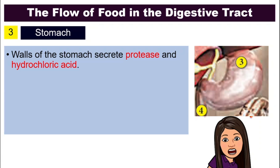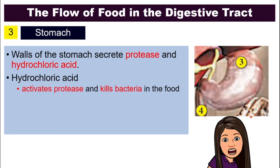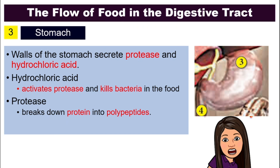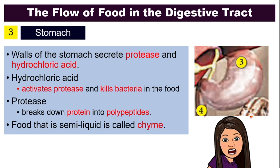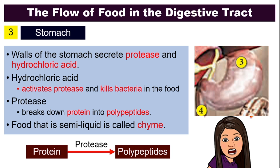After that, the food will enter the stomach. The walls of the stomach will secrete protease and hydrochloric acid. Protease is another type of enzyme. Hydrochloric acid activates protease so that it can go to work, and it also kills bacteria in the food. Protease is an enzyme that helps to digest protein — in the stomach, it breaks down protein into polypeptides. The food at this stage is in a semi-liquid form and is called chyme.